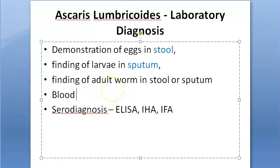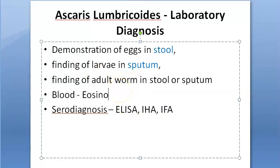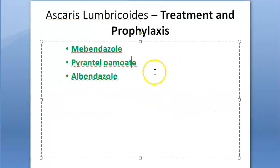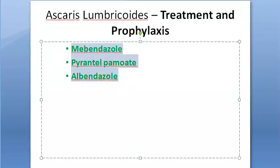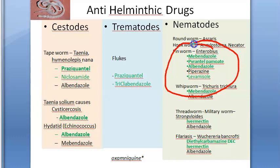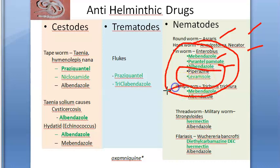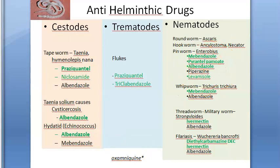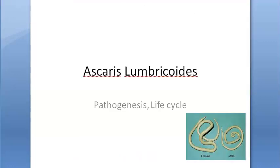A blood CBC can show eosinophilia. For treatment, the first-line drugs for nematodes including Ascaris, hookworm, and pinworm are mebendazole, pyrantel pamoate, and albendazole. Second-choice drugs include piperazine and levamisole. For other nematodes, mebendazole, ivermectin, and DEC (diethylcarbamazine) are used. For Ascaris specifically, remember mebendazole, pyrantel pamoate, and albendazole.